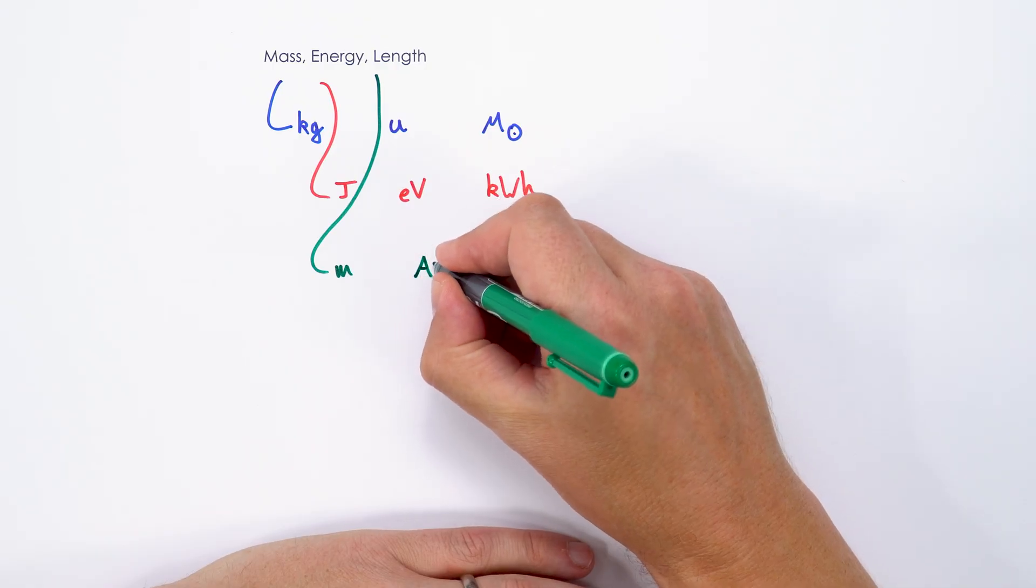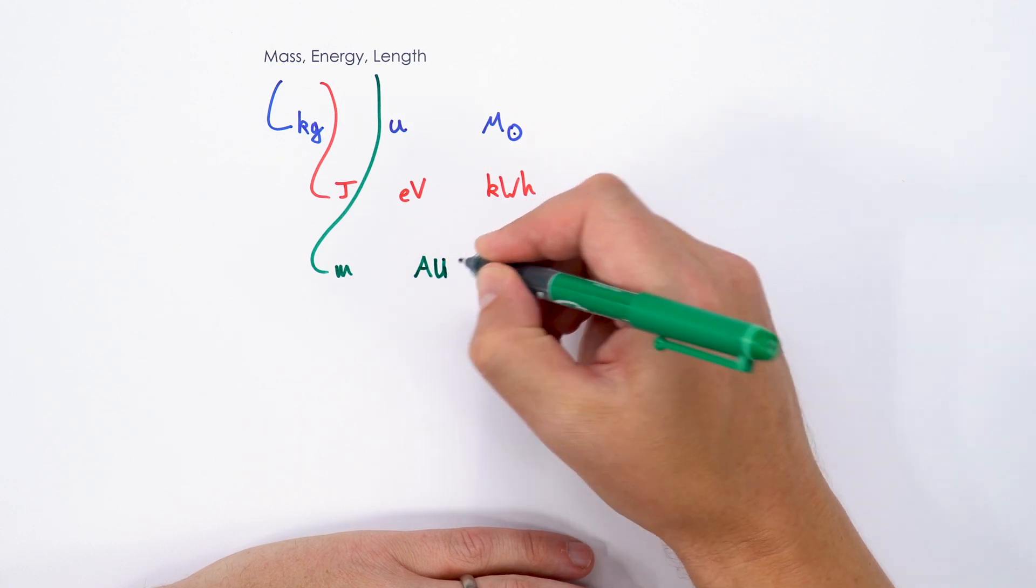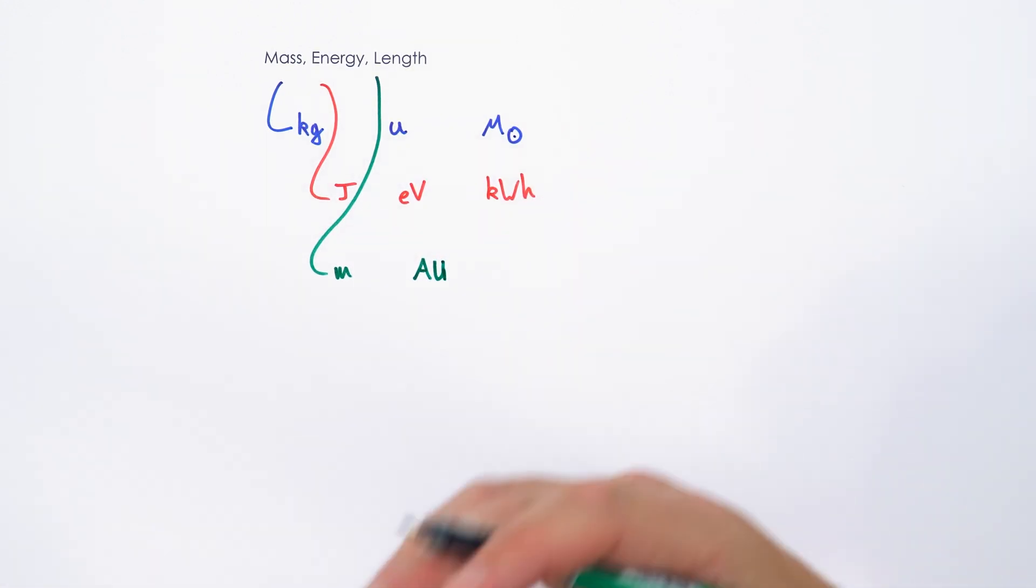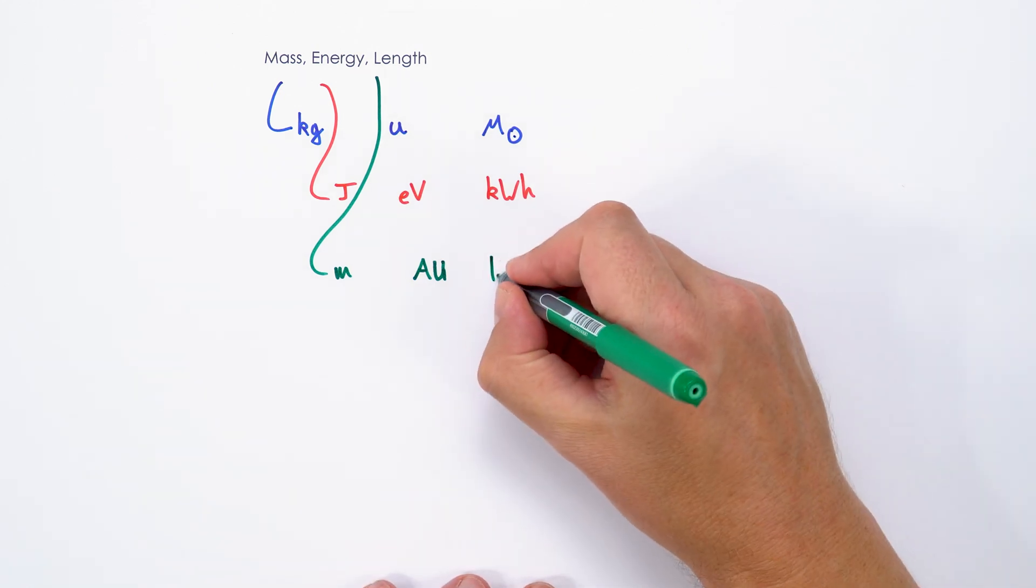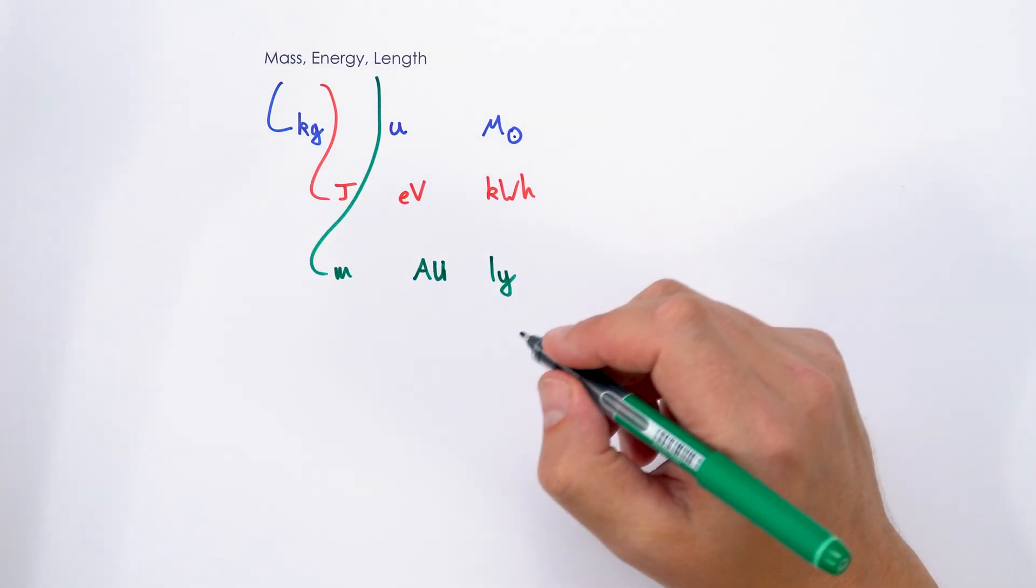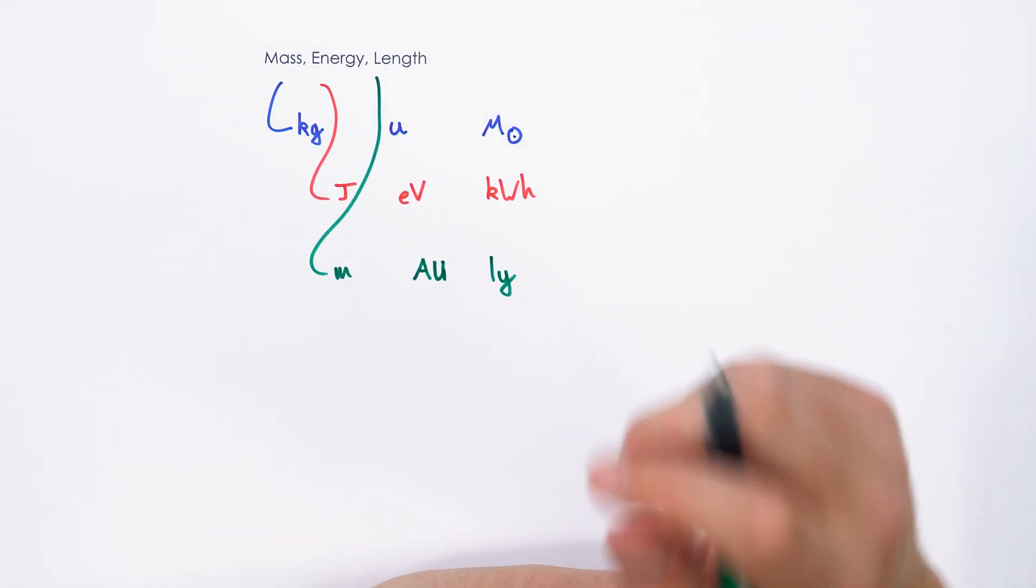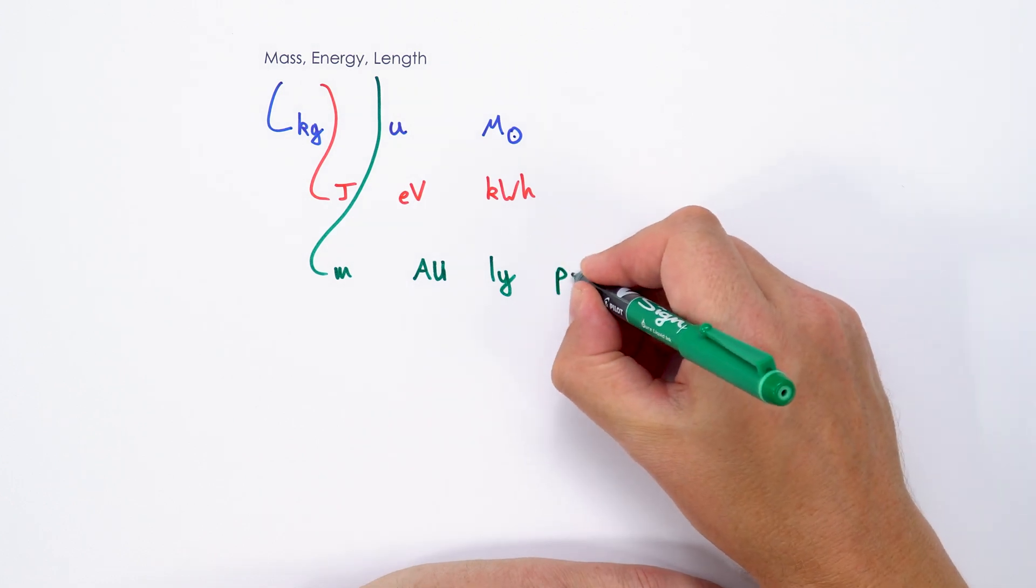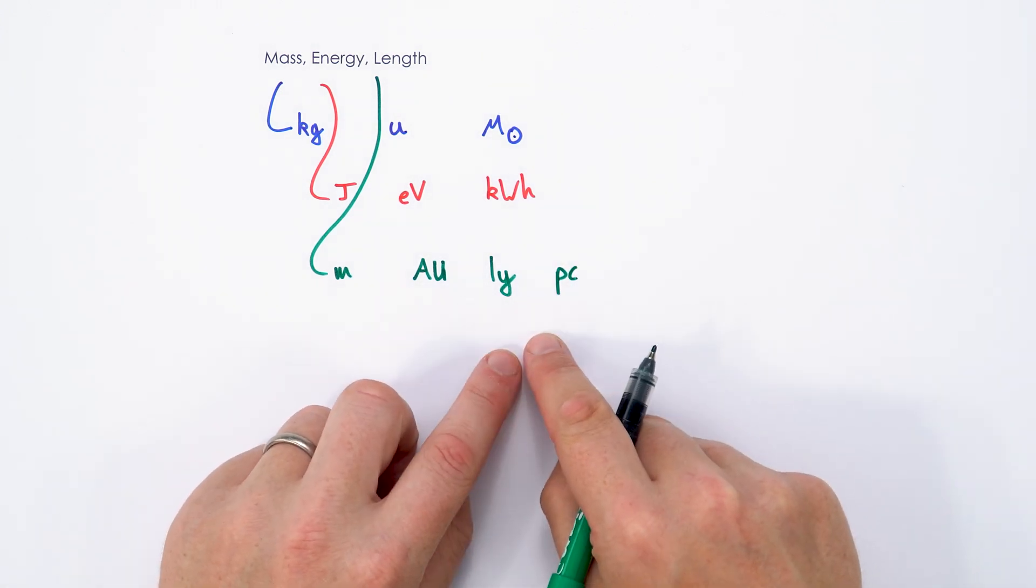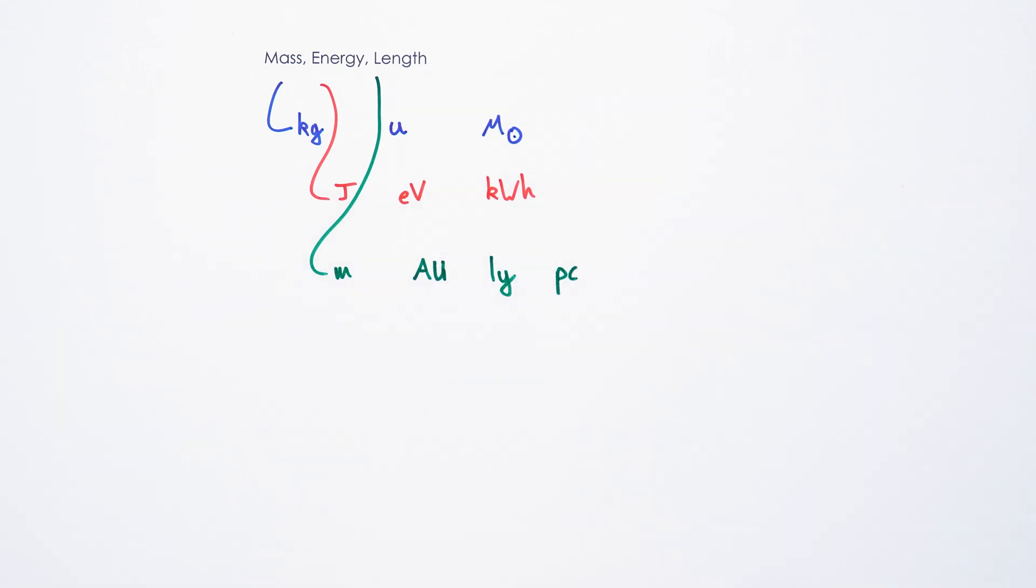If we have really big distances we might use something like the AU, which is the astronomical unit, that's the average distance between the earth and the sun. We might use things like light years, which you might be familiar with from TV, but also we sometimes use a parsec which isn't always talked about. These are just different ways of measuring distances at a large scale.